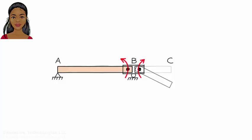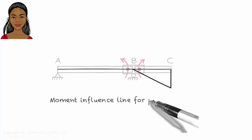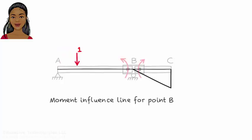Bar AB, however, cannot turn, as neither A nor B is free to move vertically. There is a pin at A and a roller at B — these support types prevent the support points from moving vertically. So this is the moment influence line for B. The diagram indicates that bending moment at B is zero so long as the unit load is located to the left of B. When the unit load moves to the right of B, a negative moment develops at B, and the moment reaches its maximum value when the load is at C.